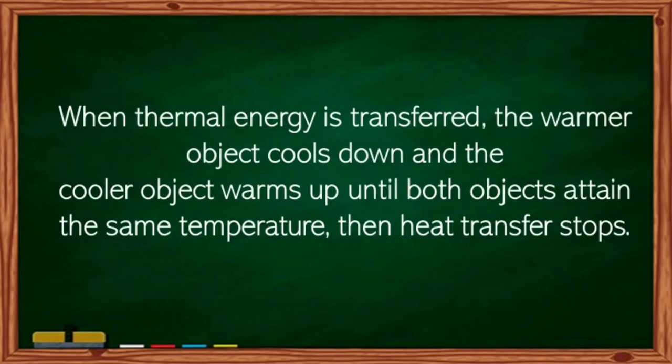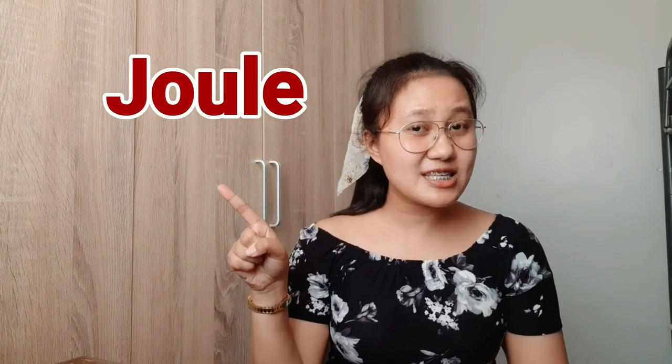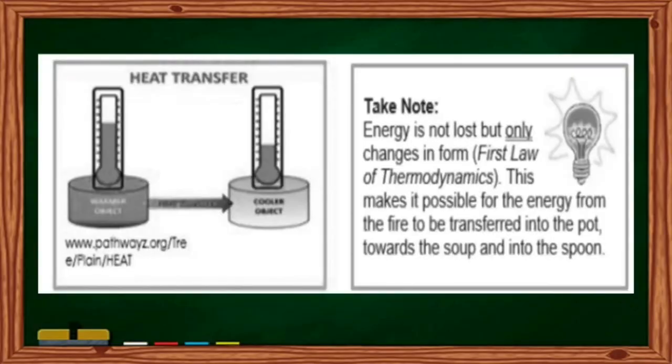When thermal energy is transferred, the warmer object cools down and the cooler object warms up until both attain the same temperature, then heat transfer stops. Always remember that heat, like all forms of energy, is measured in a unit called the Joule, with the symbol J. Energy is not lost but only changes in form — this is the first law of thermodynamics — making it possible for energy from the fire to be transferred into the pot, towards the soup, and into the spoon.